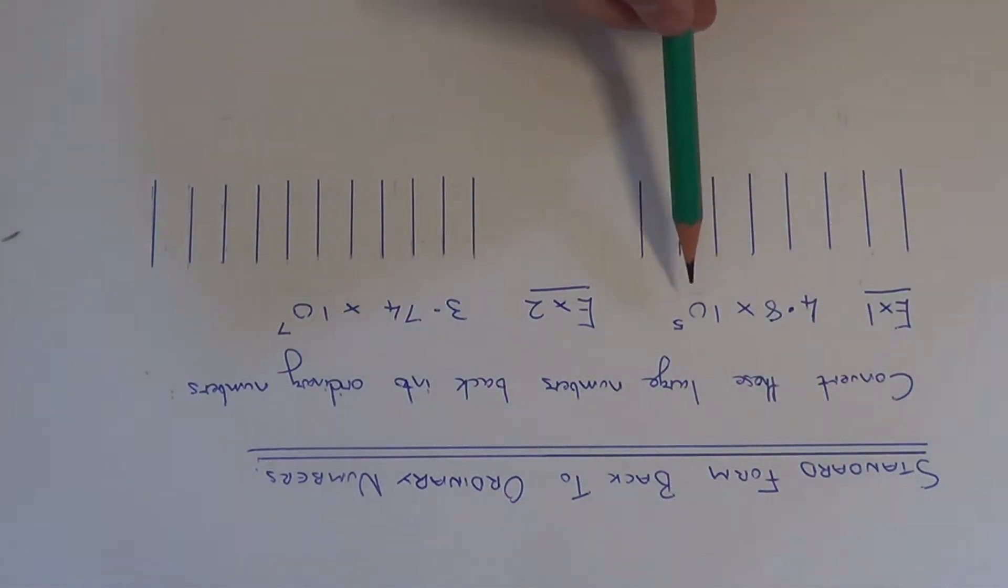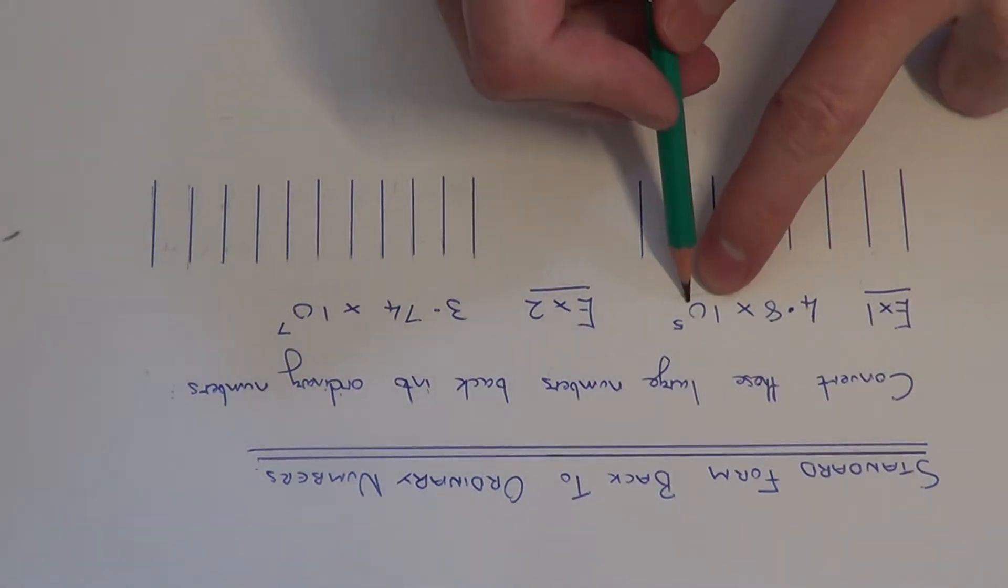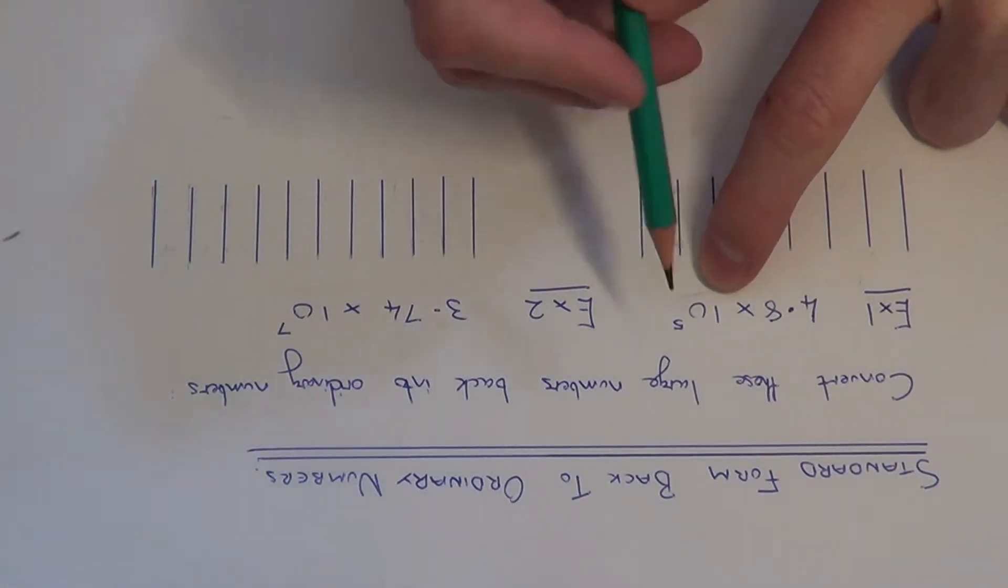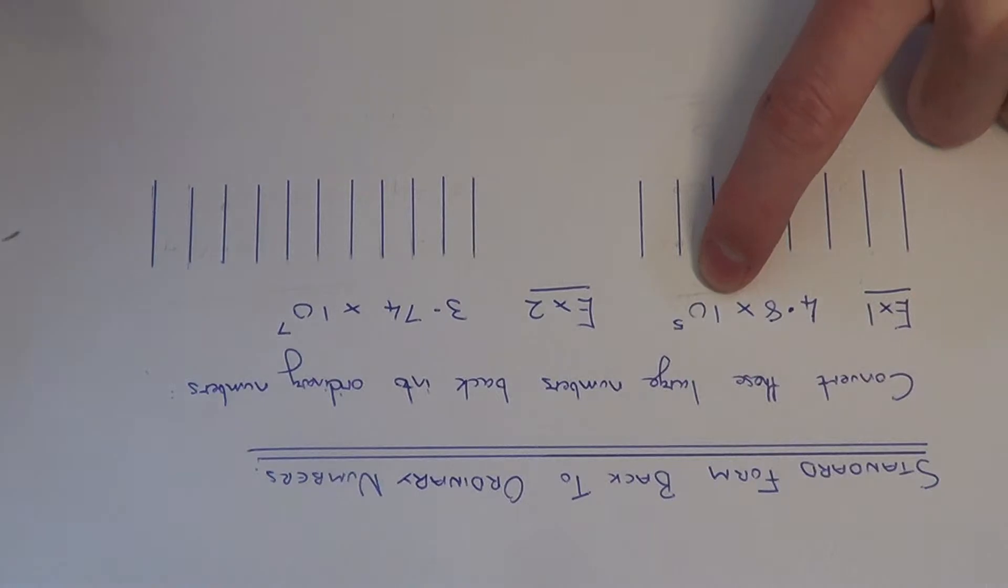We need to convert 4.8 times 10 to the power of 5 back to an ordinary number. So let's think about what this means. What we're doing to the 4.8, we need to multiply it by 10 and we need to do this 5 times.